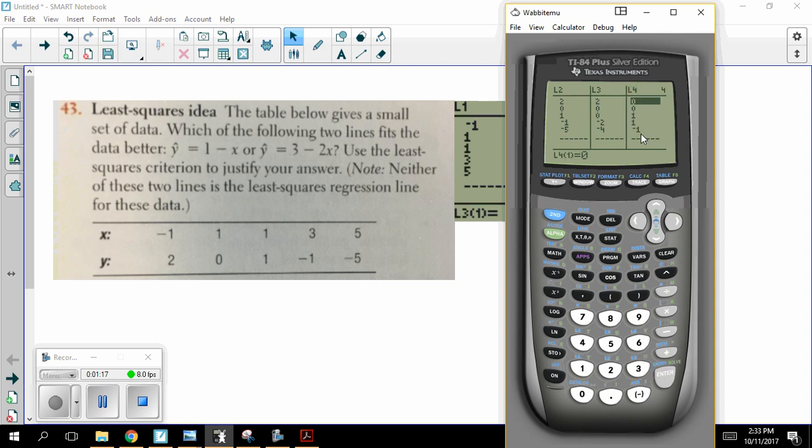They don't add up to zero here because this is really not a line of best fit. It's just some line they made up. That's irrelevant. It says use the least squares criterion. So in L5, I'm going to take all these things in L4 and square them.